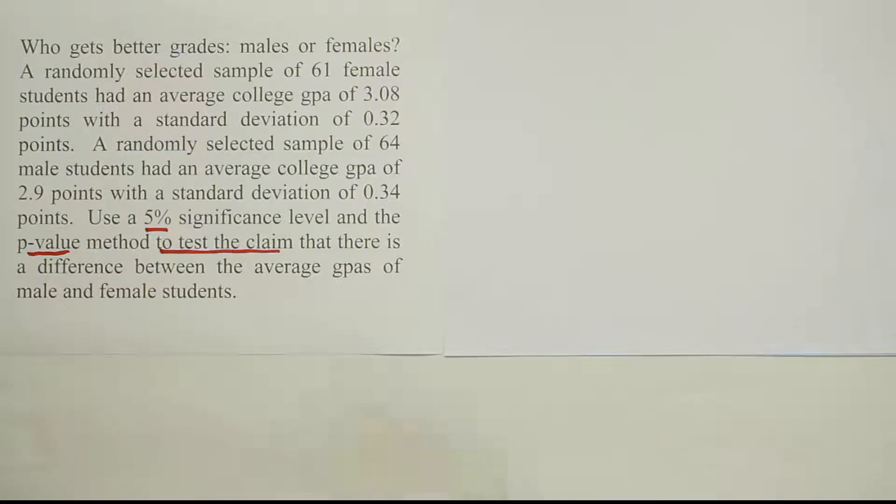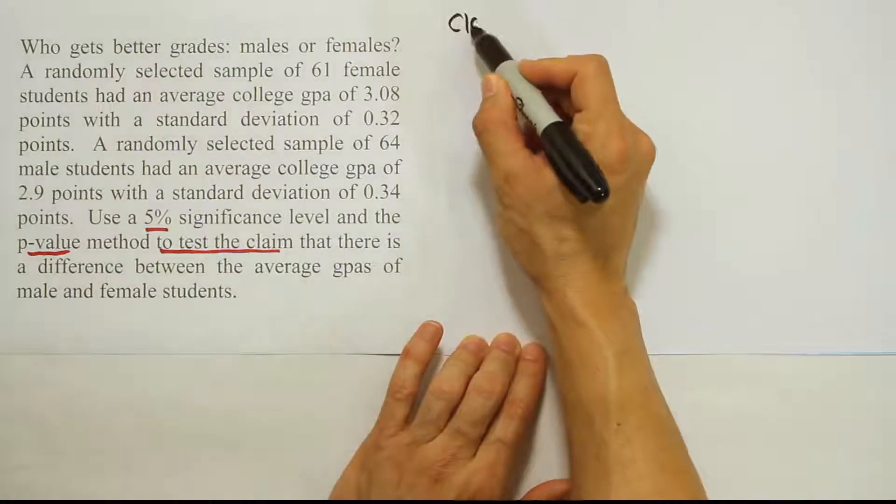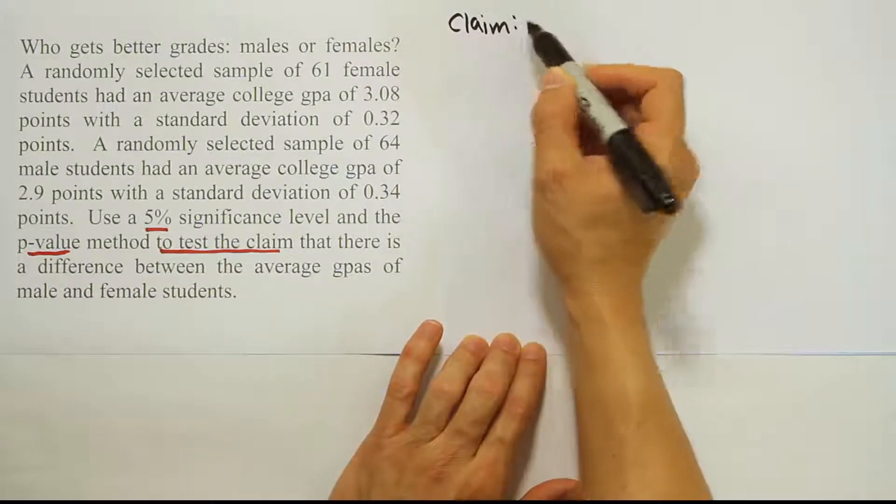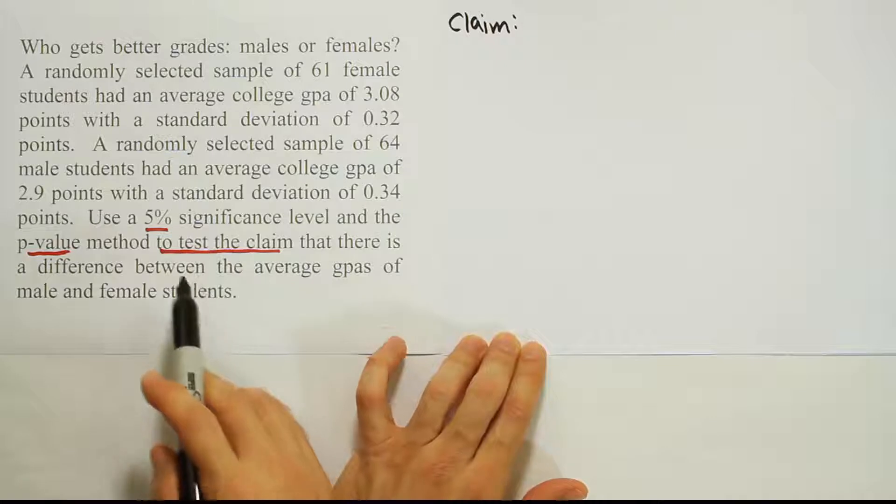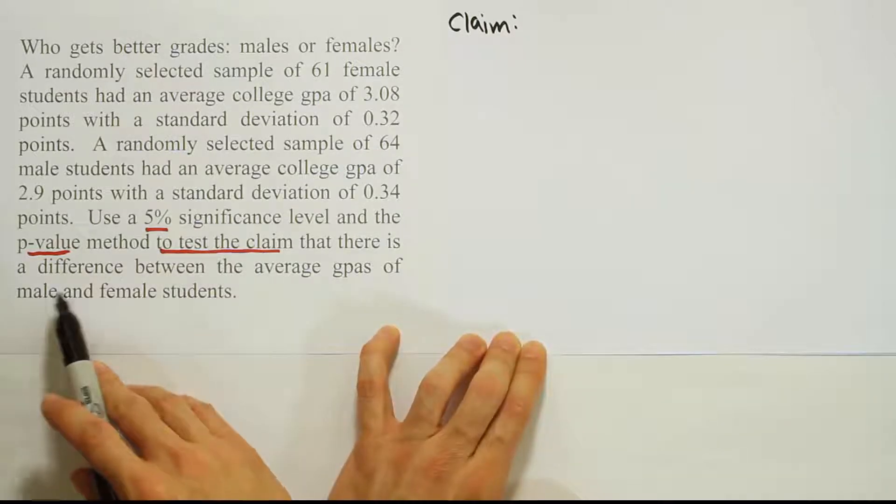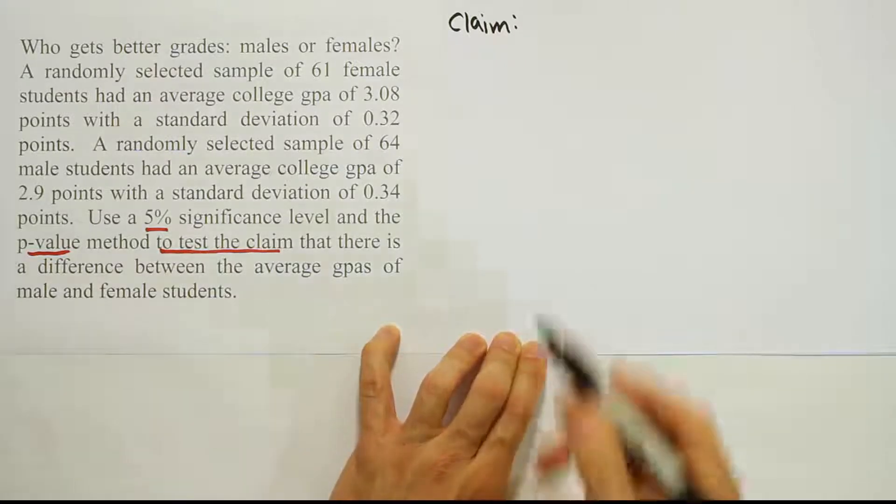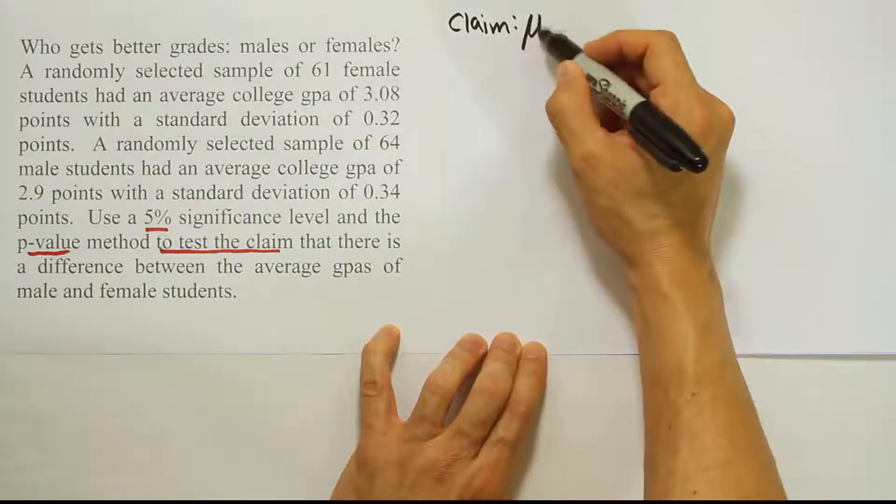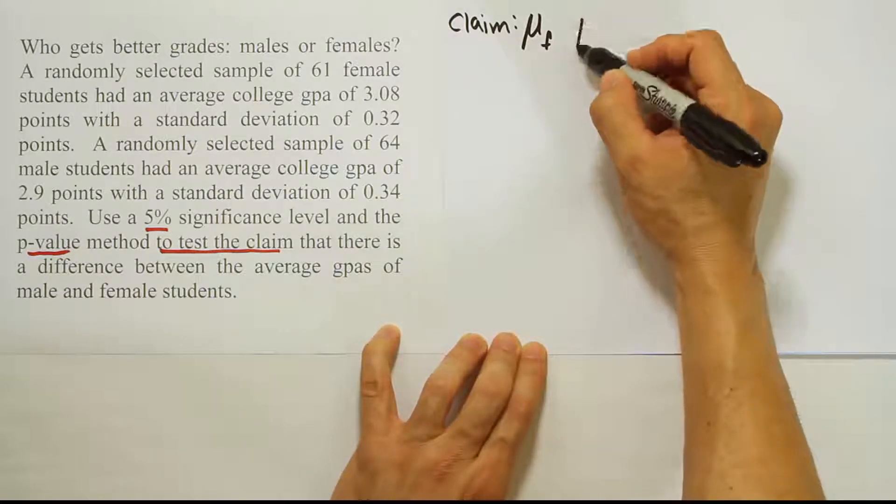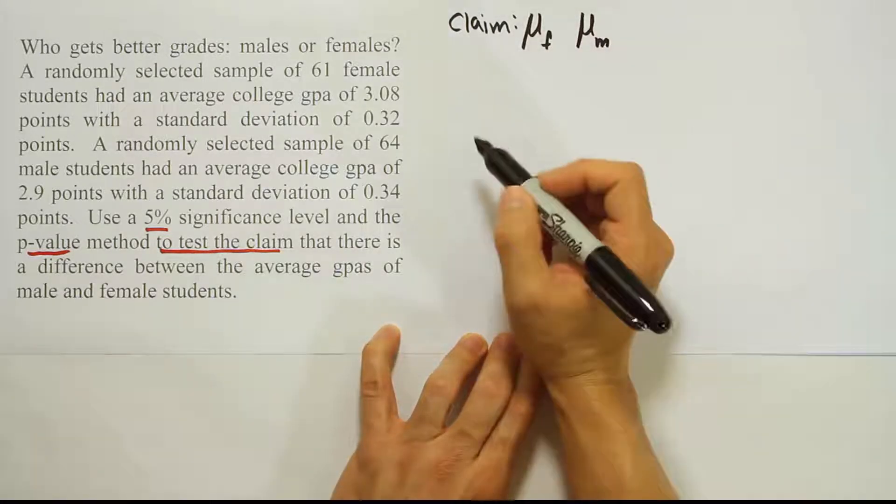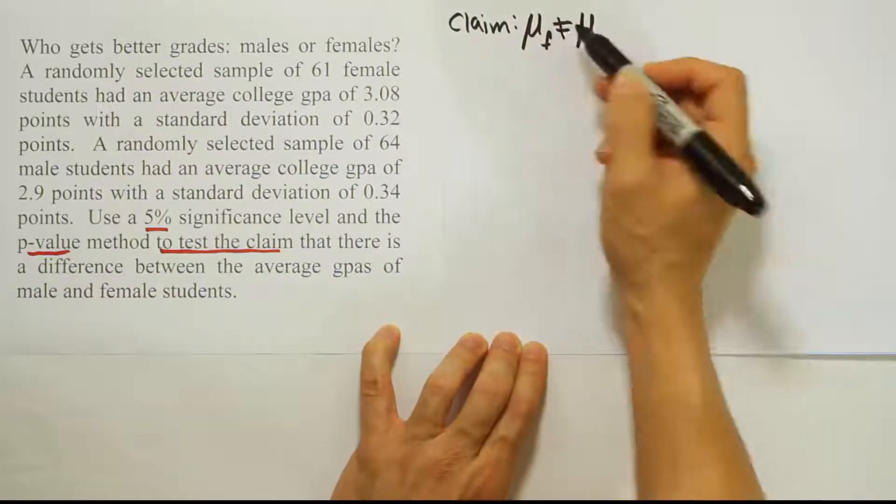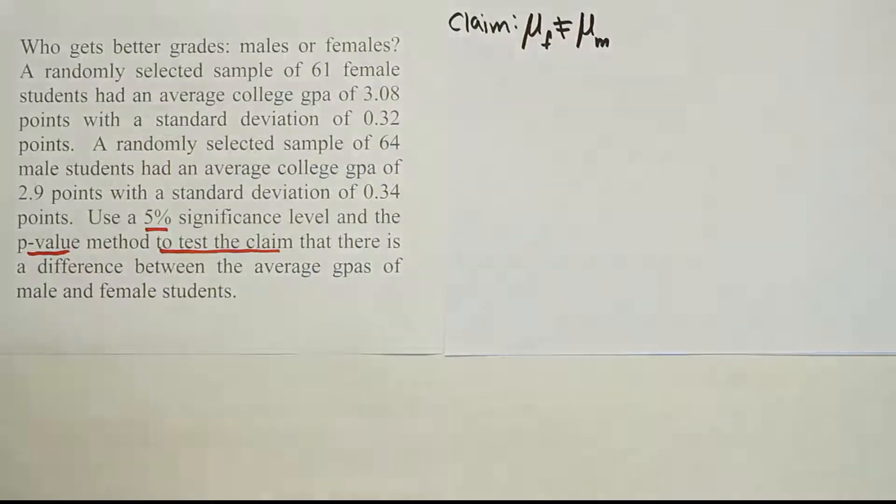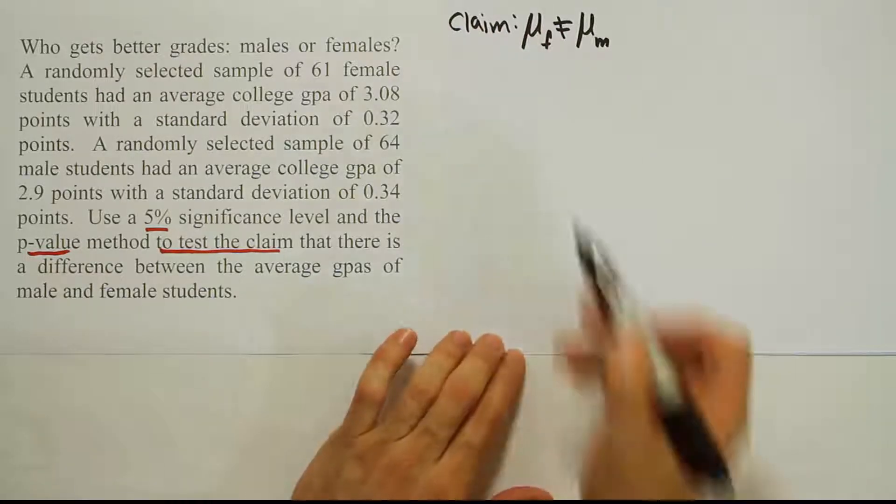The first thing I want to do is express the claim for the problem. The claim here can be found right here after the phrase 'test the claim that there is a difference between the average GPAs.' So that means if we're comparing, for example, the mean for females and the mean for males, if you're saying there's a difference, you're saying they're not equal to one another, they're not the same. You're not saying one's better than the other, you're just saying they're different. So not equal to is appropriate.